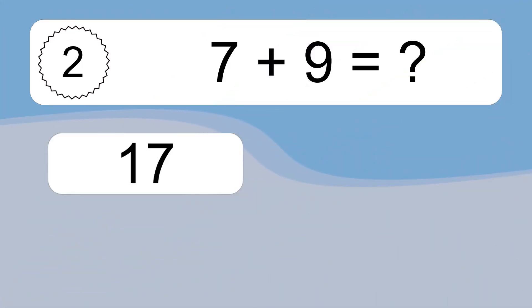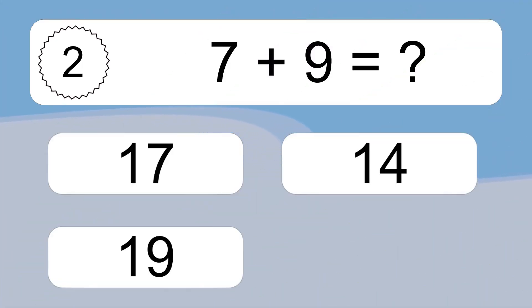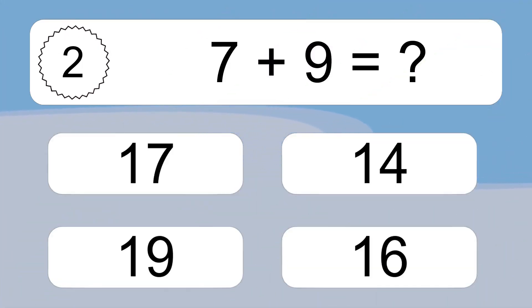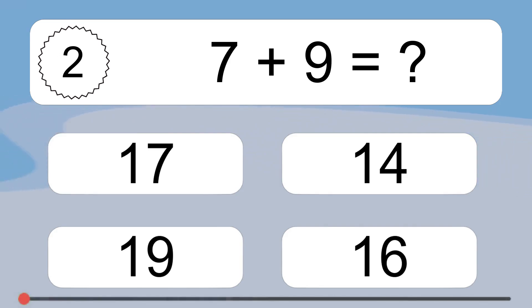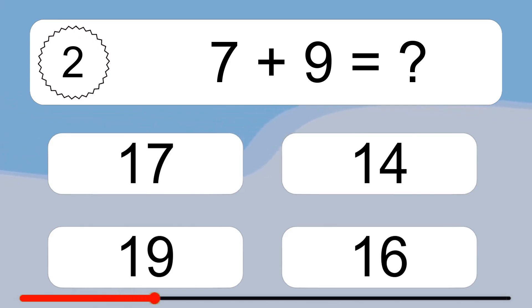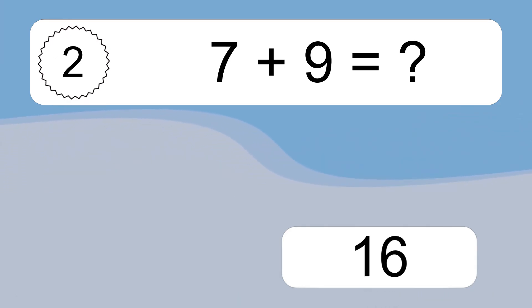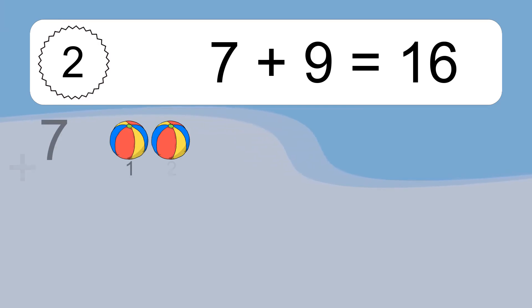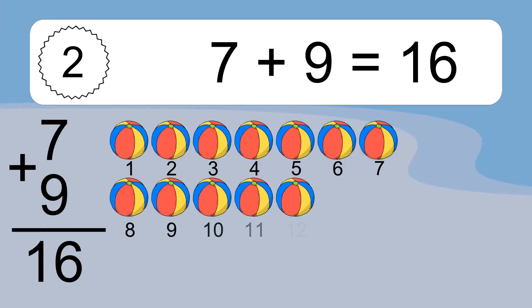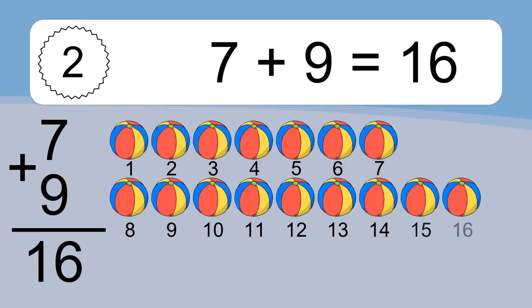7 plus 9 equals what? 7 plus 9 equals 16.